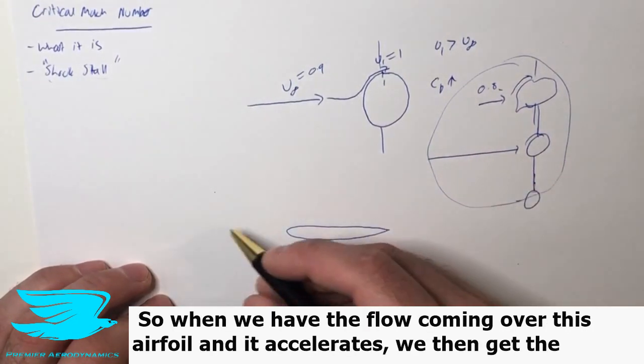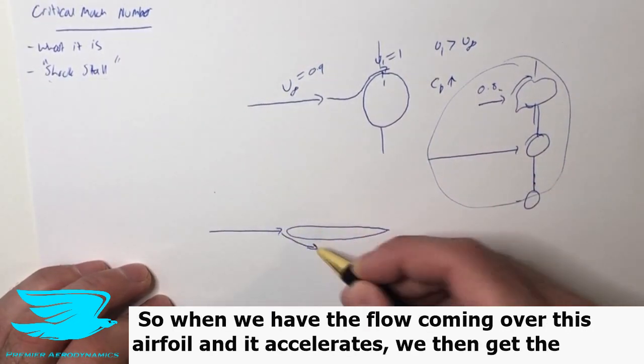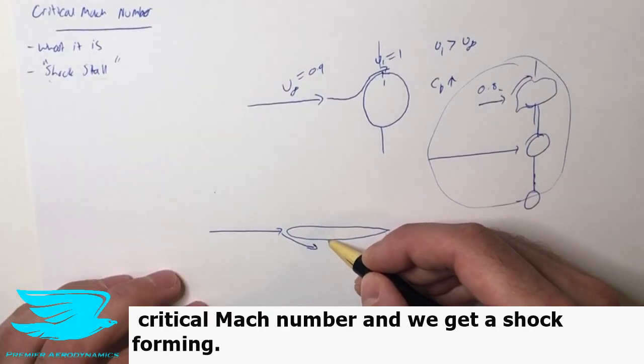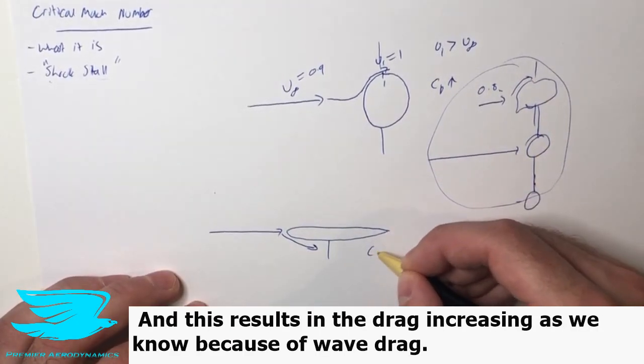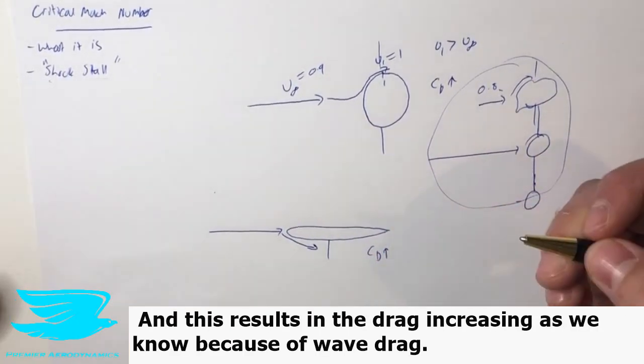So when we have the flow coming over this airfoil and it accelerates, we then get the critical Mach number and we get a shock forming. And this results in the drag increasing as we know because of wave drag.